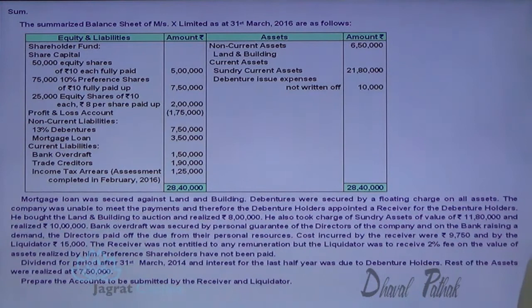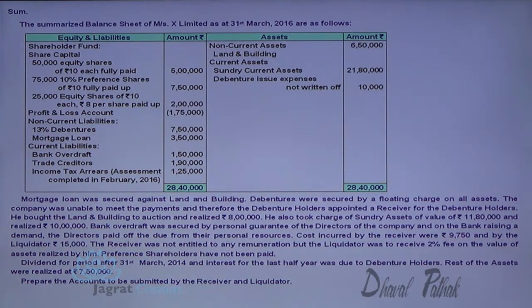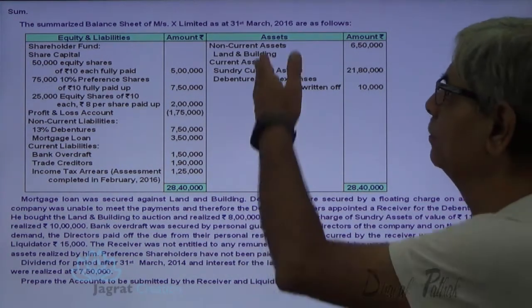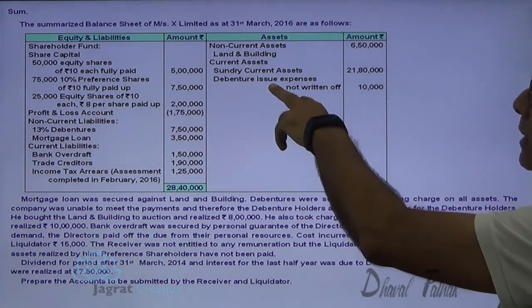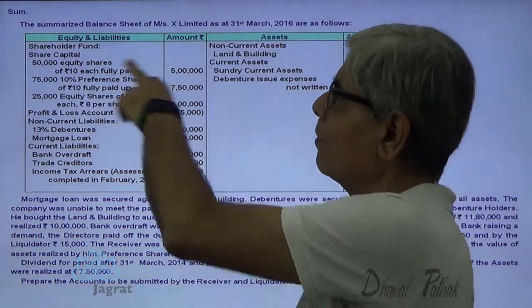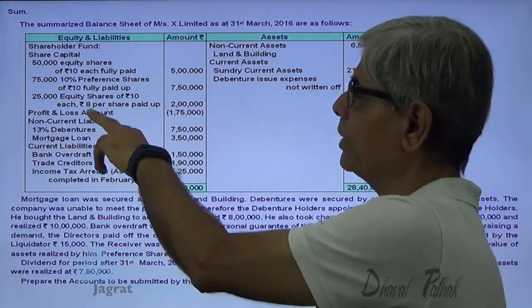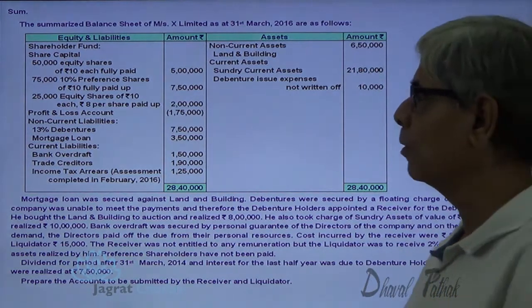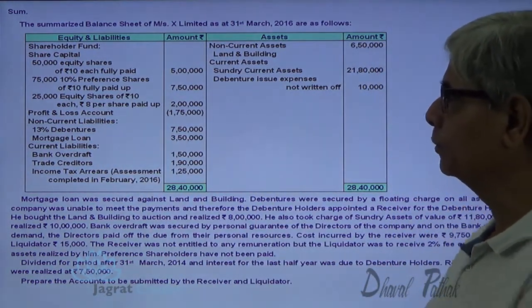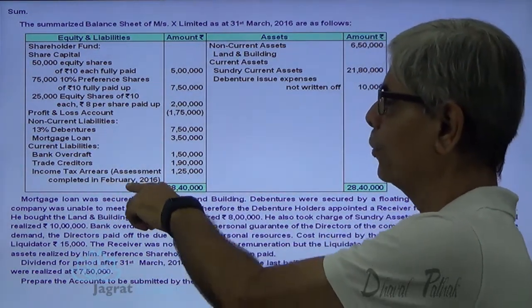Observe the sum on the screen. The summarized balance sheet of Acts Ltd as on 31st of March 2016 is as follows. On the assets side: non-current assets include land and building, and current assets include sundry current assets and debenture issue expenses not written off. On the liabilities side: shareholders fund share capital includes 10 rupee fully paid up preference shares, equity shares of 10 rupees 8% paid up, and profit and loss account debit balance. Other liabilities include 13% debentures, mortgage loan, current liabilities such as bank overdraft, trade creditors, and income tax assessment completed on February 2016.